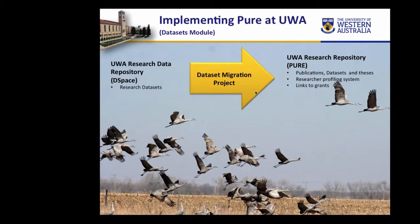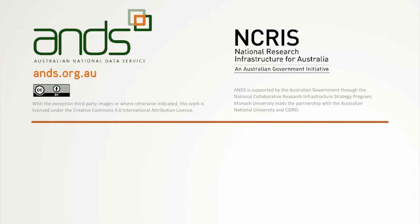We have encountered a few hurdles. We need to manually migrate our current data sets from DSpace to Pure. We need to create a crosswalk from Pure to the ANZ Research Data Australia in order to harvest our data sets. And we cannot automatically mint DOIs from within Pure, and thus we've needed to change our administrator validation workflows in order to include a manual DOI minting step.